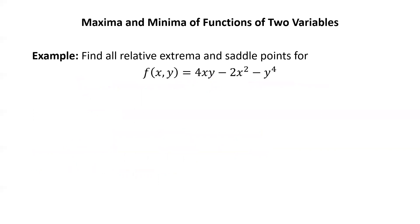Let's try an example. Find all relative extrema and saddle points for this function of two variables: f(x,y) equals 4xy minus 2x squared minus y to the fourth. Now is a good time to pause the video, try this example yourself, and then resume to check your answer.